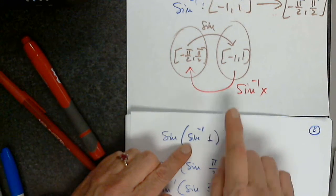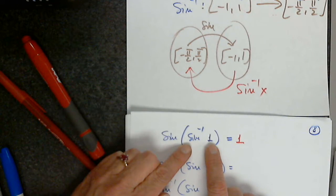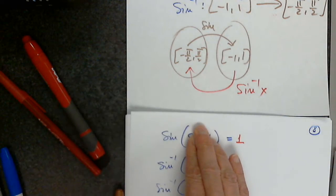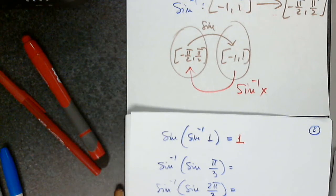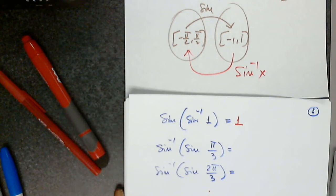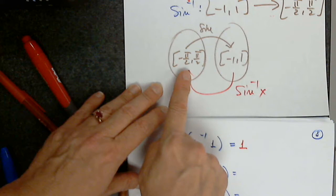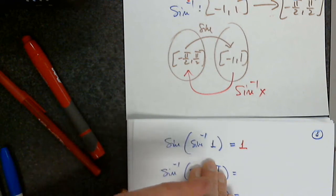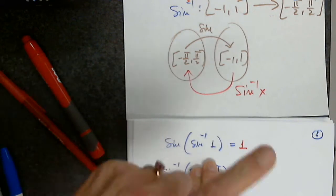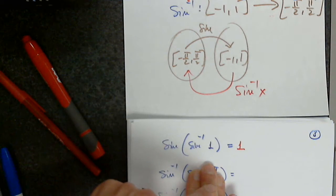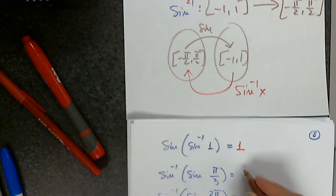Can I apply sine inverse to 1? Yes. This will give me an angle, and then I can apply sine to this angle and get 1, so all conditions are fulfilled. Sine inverse of sine of pi over 3 — I want to write pi over 3 as the answer. Is pi over 3 in the domain? Yes. Since sine of pi over 3 is where it should be, sine inverse will be applied to this number. The answer must be pi over 3, which is an angle.